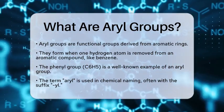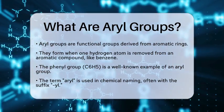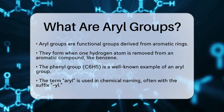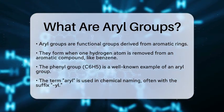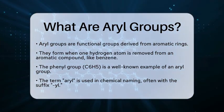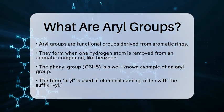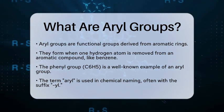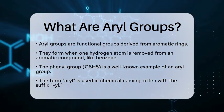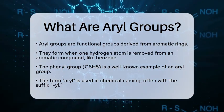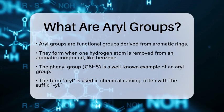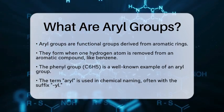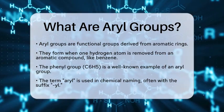In simple terms, aryl groups are functional groups that come from aromatic rings. They are formed when one hydrogen atom is removed from an aromatic compound, like benzene. This results in a group such as phenyl, which has the formula C6H5. The term aryl is used in chemical nomenclature to describe these groups.